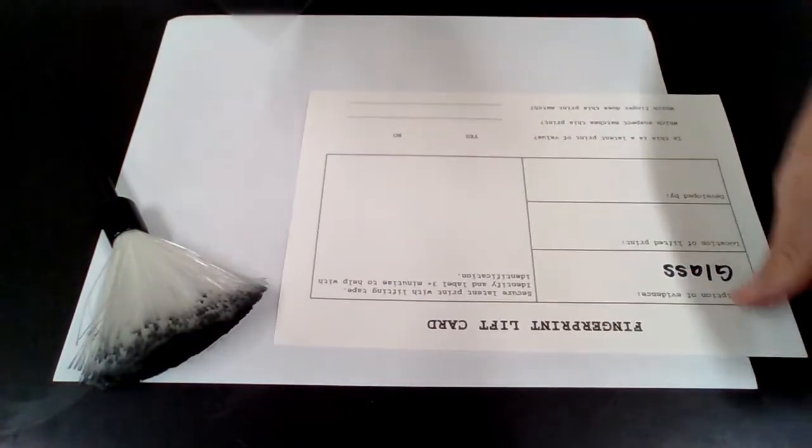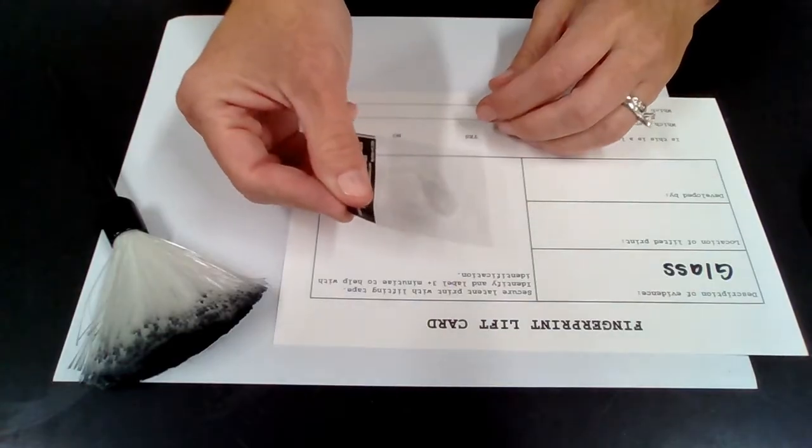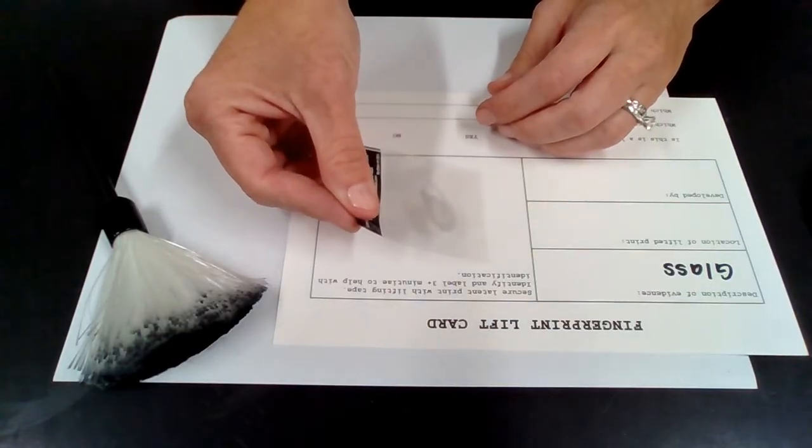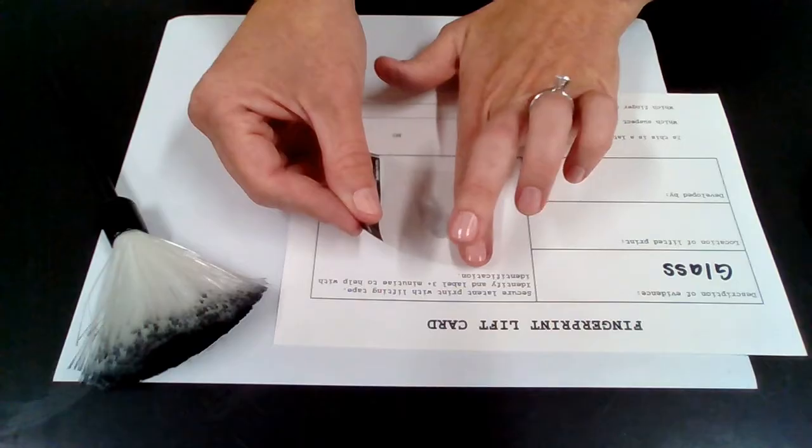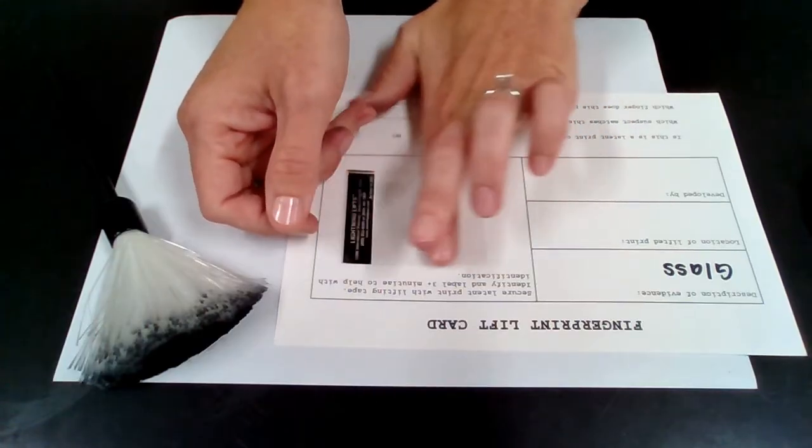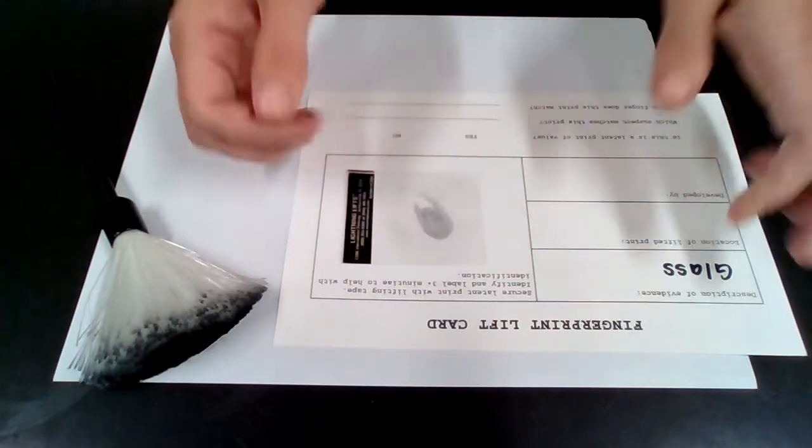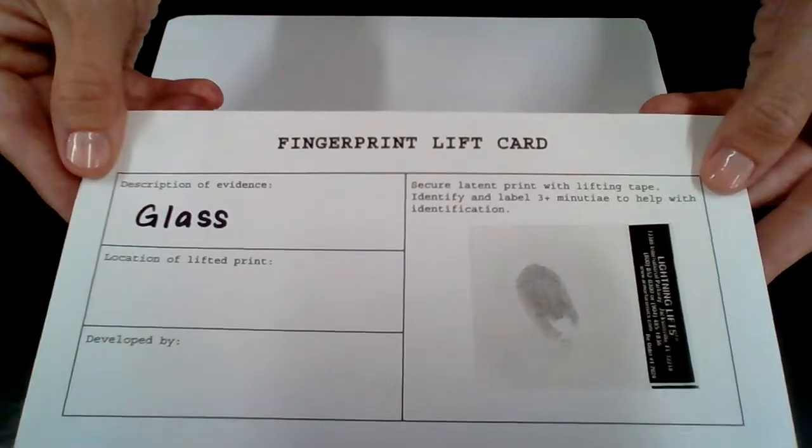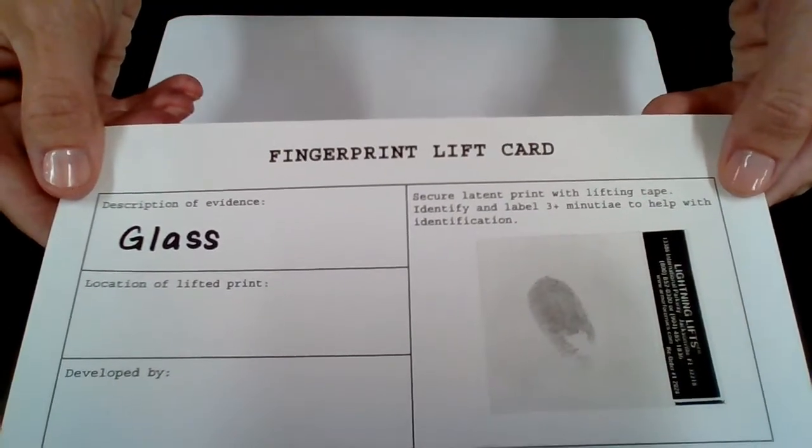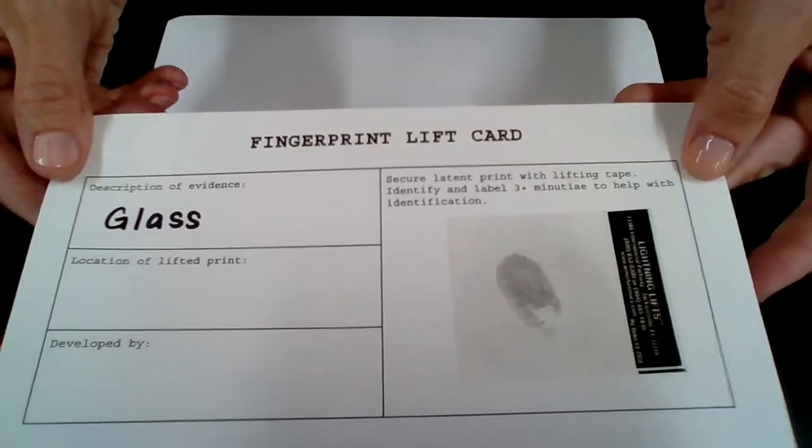If I set this glass off to the side, I can then get my fingerprint lift card and attach it down. It really doesn't matter which direction you go as long as you go from one side to the other. And now we have transferred that fingerprint onto a lift card for further evidence analysis back at the lab.